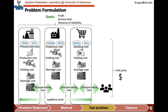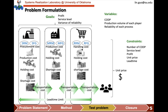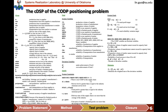We have three goals in this supply chain: maximize the profit, maintain the service level, and minimize the variance of reliability among the players — in other words, equality among the players. The variables include the CODP as discrete variables, and the production volume and reliability of each player as continuous variables. The constraints are the number of CODP, the range of service level, the lower bound of profit, and the range of unit price and lead time. We implement the model on the slides.